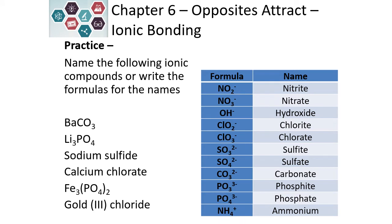Try to name the following ionic compounds or write their formulas. Pause the video and determine the name or the formula. Barium is in the second column of the periodic table, so we know its charge and we don't need to include a Roman numeral. CO3 is our anion. If we look in the table, CO3's name is carbonate.